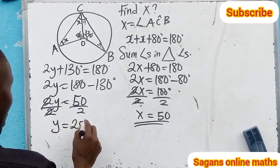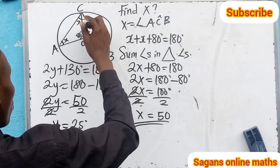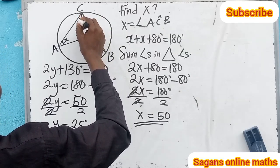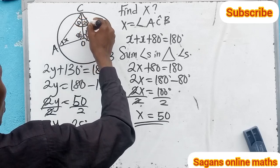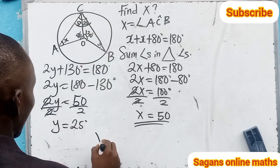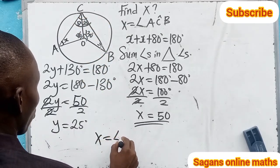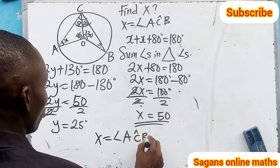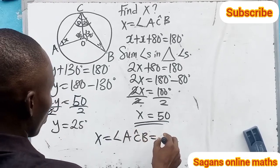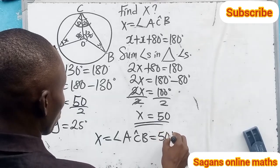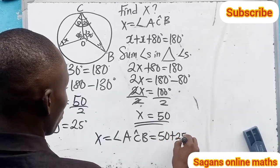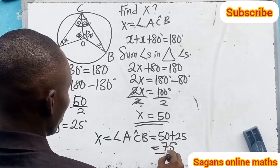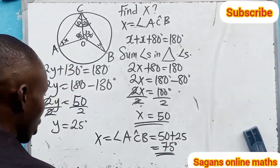That means here is now 25 degrees, and here is now 50 degrees. That means if we sum everything here now, we see that angle ACB is equal to 50 plus 25, which gives us 75 degrees. And this is the solution for this particular problem.